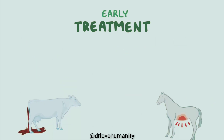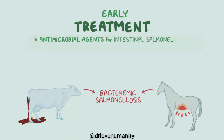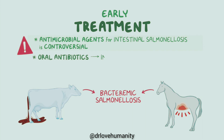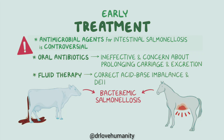Early treatment is essential for bacteremic salmonellosis in animals, but use of antimicrobial agents for intestinal salmonellosis is controversial. Oral antibiotics may be ineffective, and there is concern about prolonging carriage and excretion of the organism. Fluid therapy to correct acid-base imbalance and dehydration may be necessary.